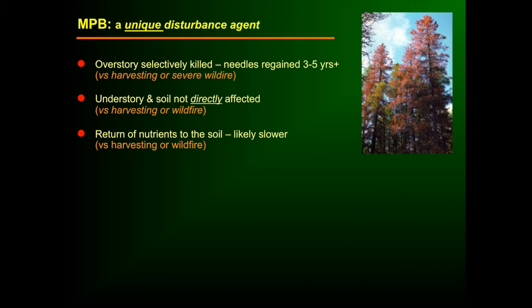Why is this a unique feature on the landscape? First, the overstory is selectively killed, and needles are retained on those trees for a period of two to five years. That sets it apart from disturbances like harvesting or severe wildfire. Moreover, the understory and the soil are not directly impacted by a mountain pine beetle attack, which really sets this kind of disturbance aside from harvesting and wildfire.